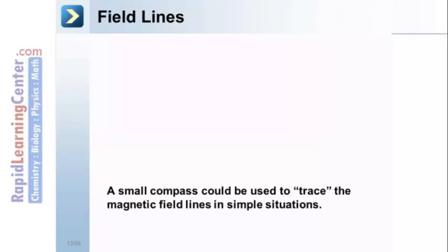Field lines. A small compass could be used to trace the magnetic field lines in simple situations. This is a common laboratory experience.